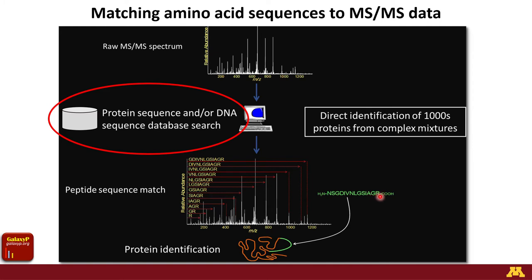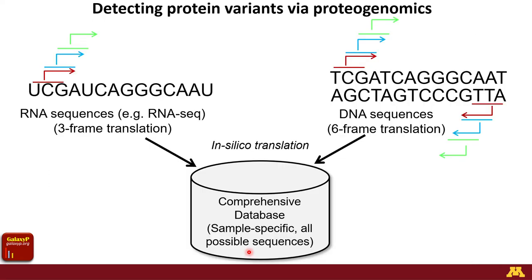Once we get a confident amino acid sequence, we can relate that back to the protein it comes from — because we started by purposely digesting the intact protein with trypsin into smaller peptides. We then determine where in the database that sequence comes from in terms of the intact protein, allowing us to infer a protein identity from the peptide sequence identified by mass spectrometry. This is automated and can identify thousands of proteins from complex mixtures.